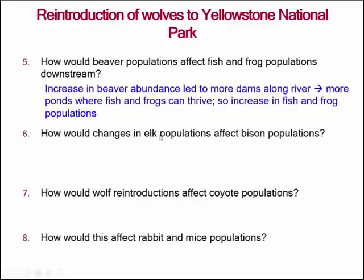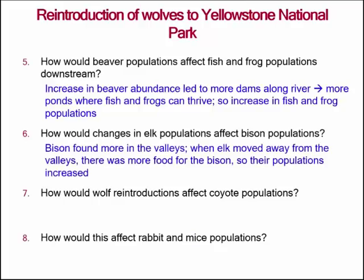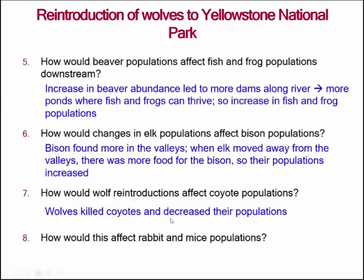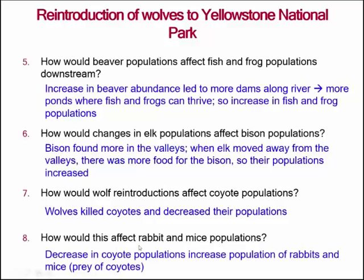The change in elk populations also affected bison populations. Elk and bison both like to eat grass, though elk also like to eat shrubs and tree leaves. But bison are found more in the valleys, so when the elk moved away from the valleys there was more food for the bison, so bison populations increased. The wolves also killed coyotes, decreasing coyote populations, and since coyotes feed on rabbits and mice, there was an increase in rabbit and mouse populations.